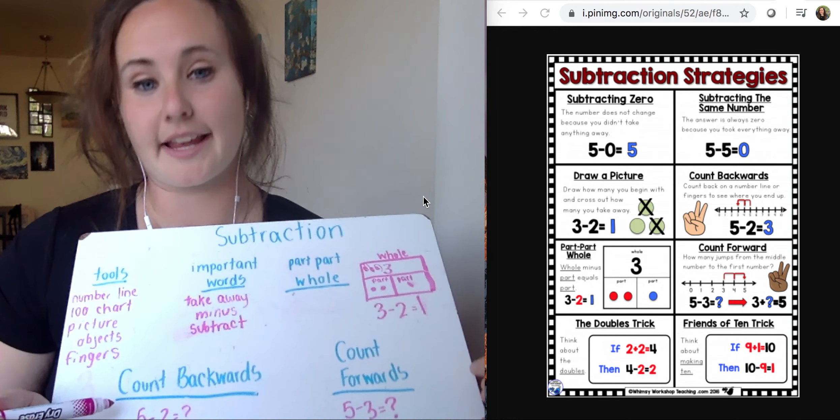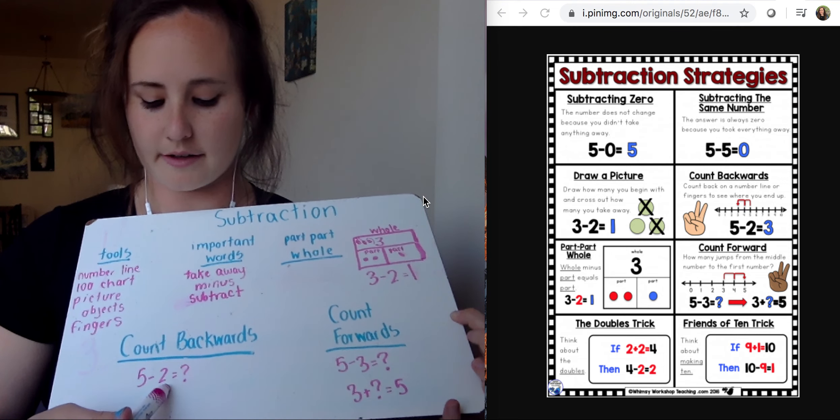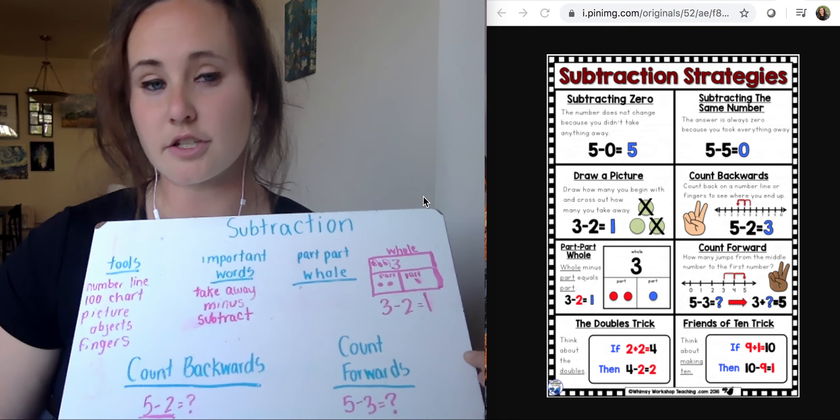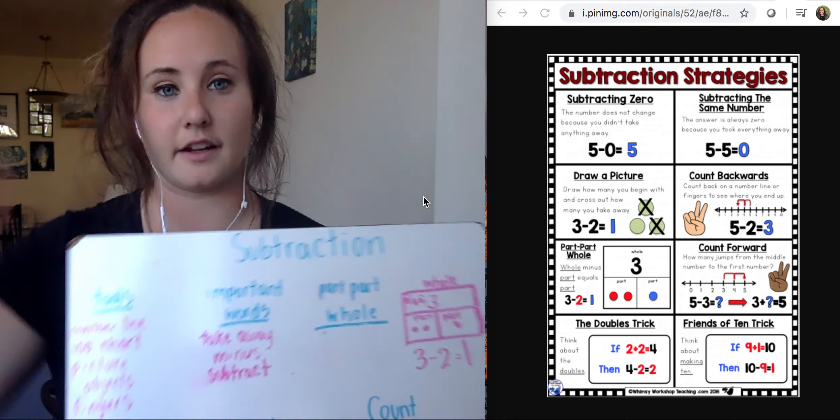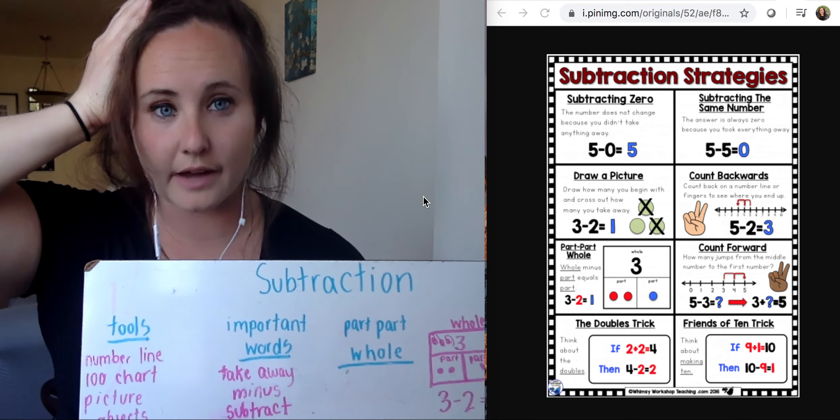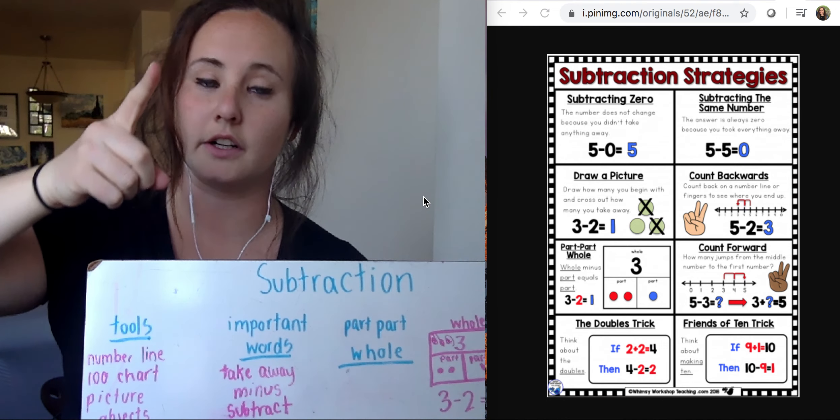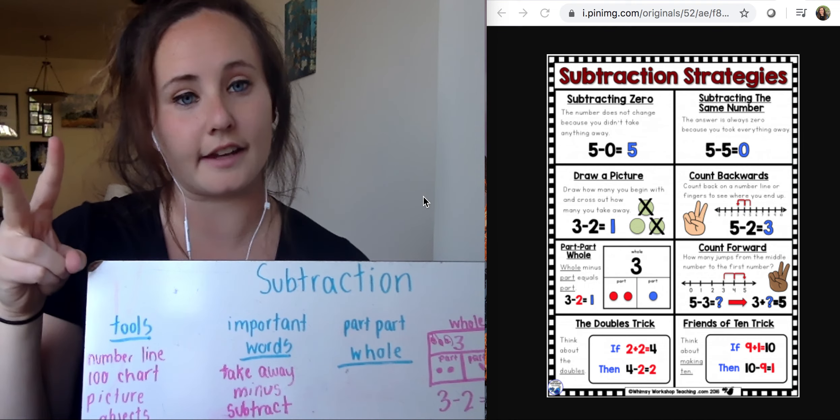Another way we talked about was counting backwards. So again, here's my number sentence that I get. I have 5 minus 2. Something I can do if I want to use my brain, I could put five in my head, five. And then I can count backwards two. Five, four, three. There's my two. What did I end on? I ended on three.